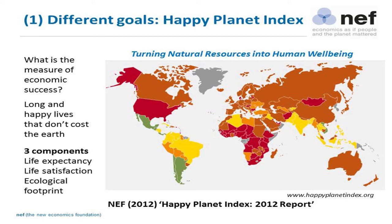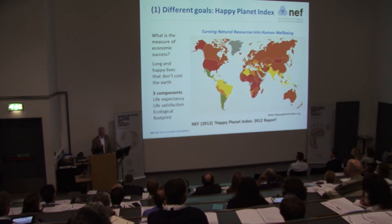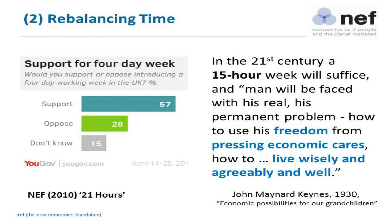Sub-Saharan Africa is not drawing on planetary resources too much — but that's a problem that needs to be solved. The US, on the other hand, does generate high levels of life satisfaction and life expectancy, but it does so by consuming vast quantities of planetary resources. It's a very inefficient system.